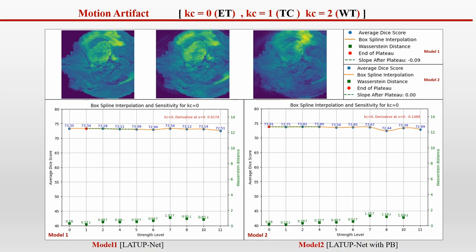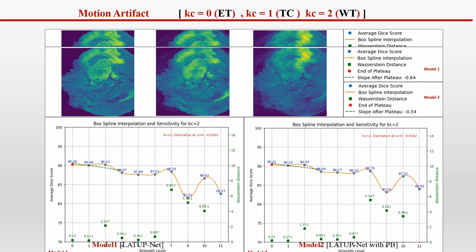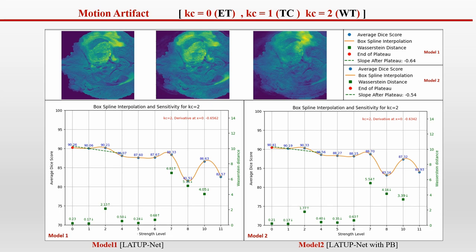For motion artifacts, both models are not very sensitive to this perturbation and remain robust up to a certain threshold, consistent for all tumor regions. However, at level 0.07, there is a non-linear behavior where both models' performance drops and then rises again. This indicates that once a certain noise threshold is reached, there are fundamental changes in pixel values and the image may become too blurry, preventing the model from extracting any further features.